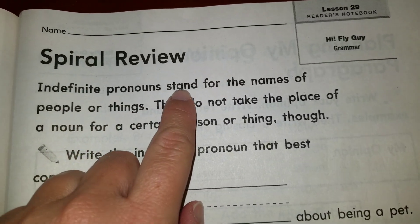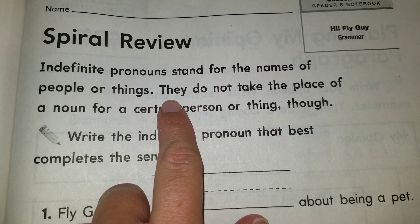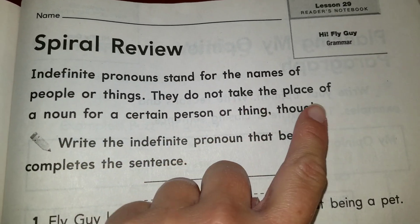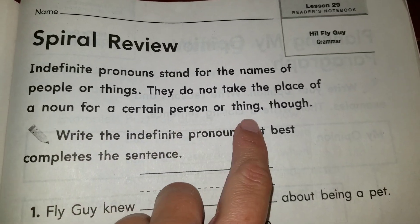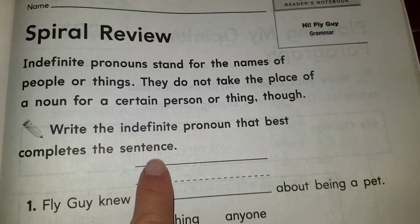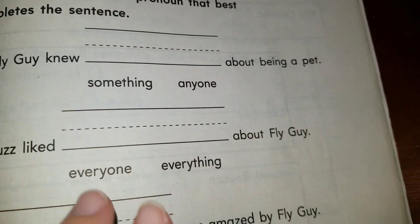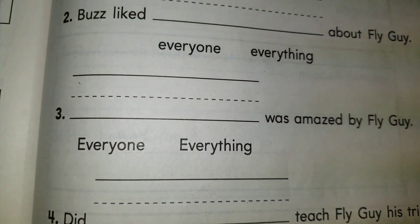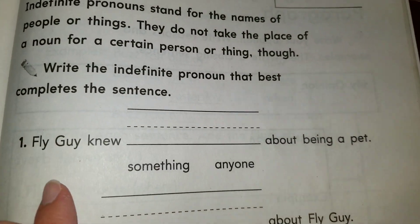Indefinite pronouns stand for the names of people or things — just like a kind of review. They do not take the place of a noun for a certain person or thing. We need to find the indefinite pronoun that best completes the sentence. Under each sentence we have two indefinite pronouns. We have four sentences, so we have eight indefinite pronouns total, but we can only choose one to complete each sentence.